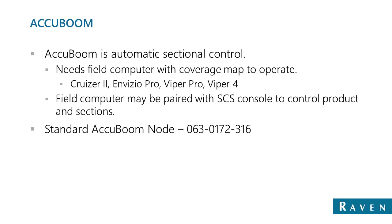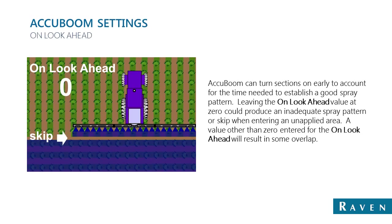The standard AccuBoom node you'll see in the field is the 316 AccuBoom node. The main AccuBoom settings you'll be tweaking when setting up for the first time or making field changes include the on-look-ahead time, which is how far the field computer looks ahead from the current GPS location — whether entering a previously applied or unapplied area. A good starting point is 1.5 to 2 seconds. The faster you're traveling, the lower the time needed since you're covering more distance quickly.